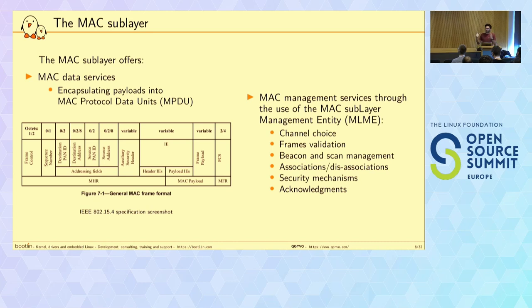From the MAC layer you have to choose the channel — you tell the PHY to please change the channel. Frame validation is supposed to happen at MAC level as well. All the network management features, such as scanning, beaconing, associating, and disassociating, are also handled by this entity. There are some security mechanisms as well, which I won't talk about. Acknowledgements are also part of the MAC layer.